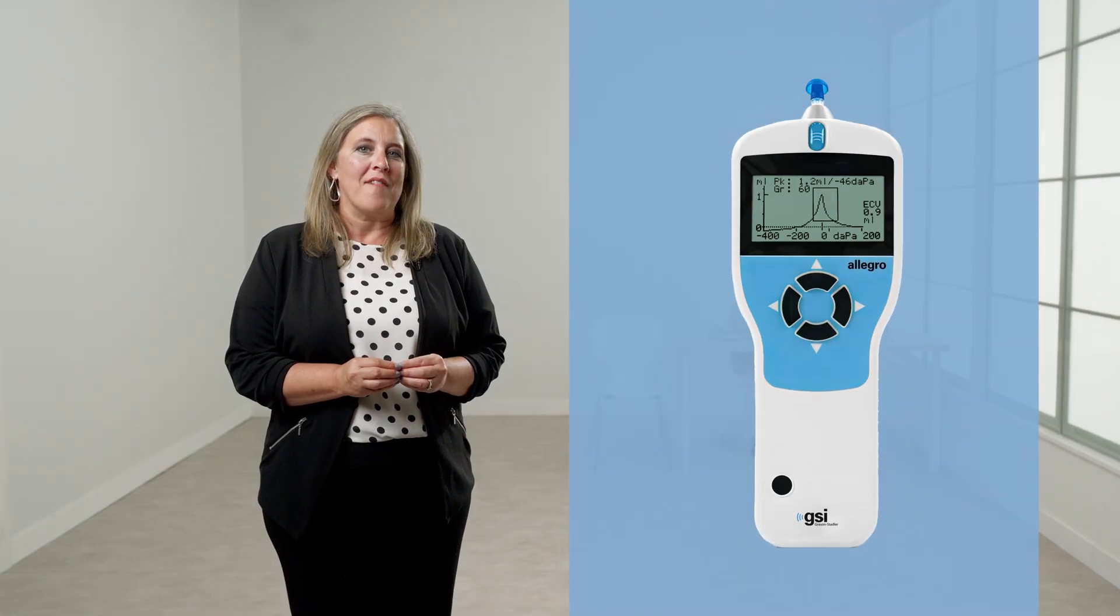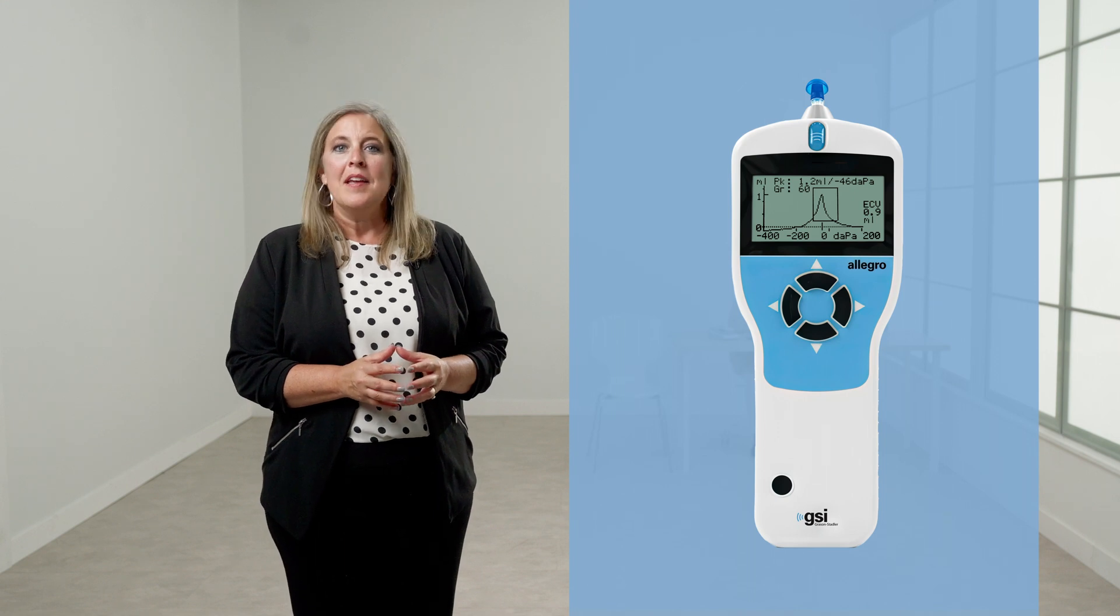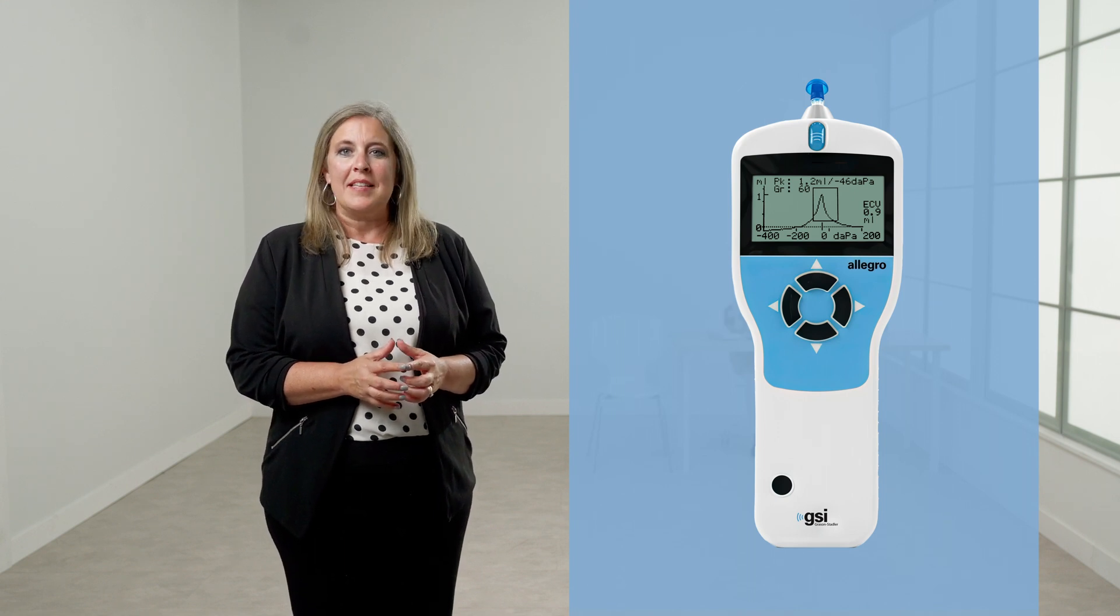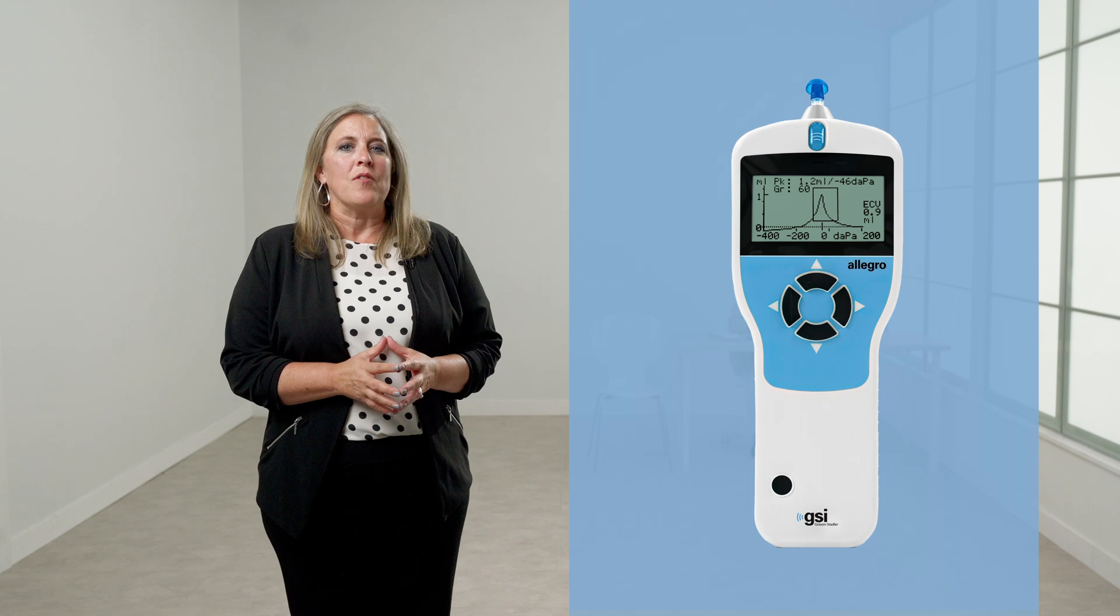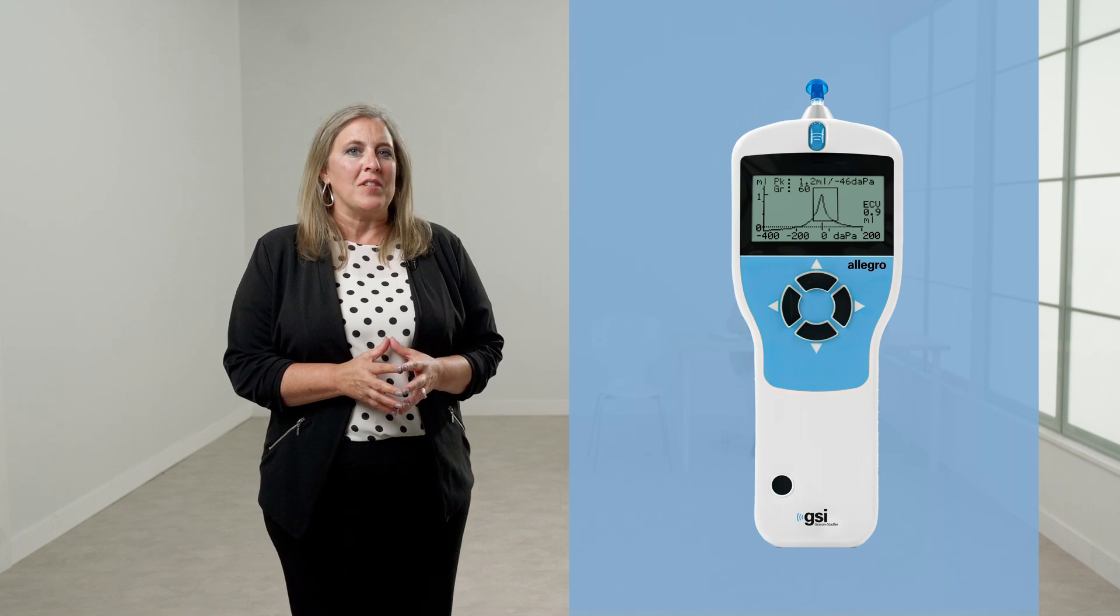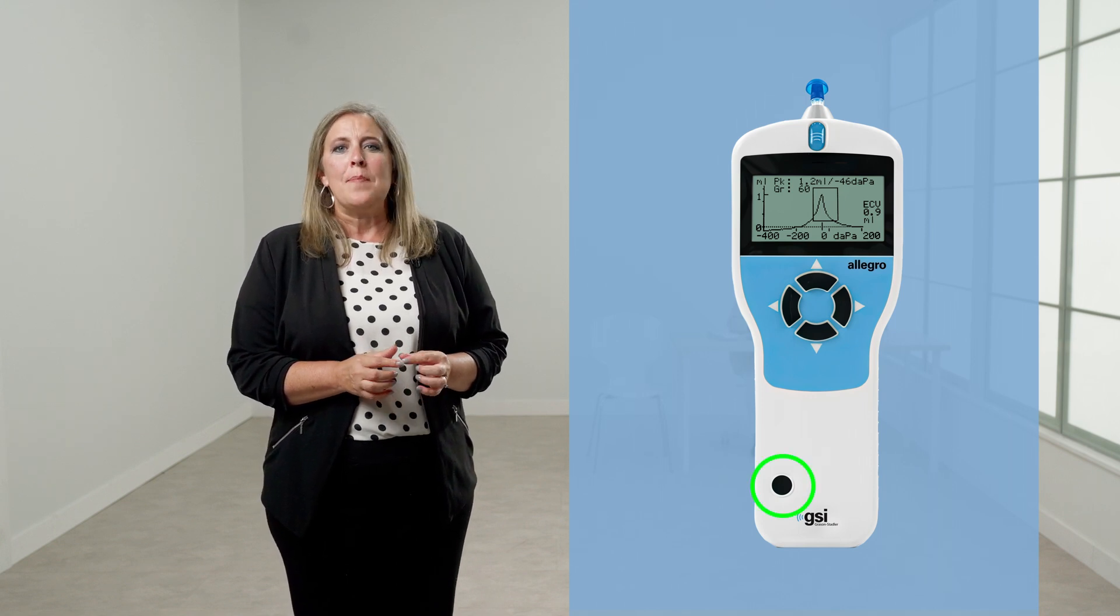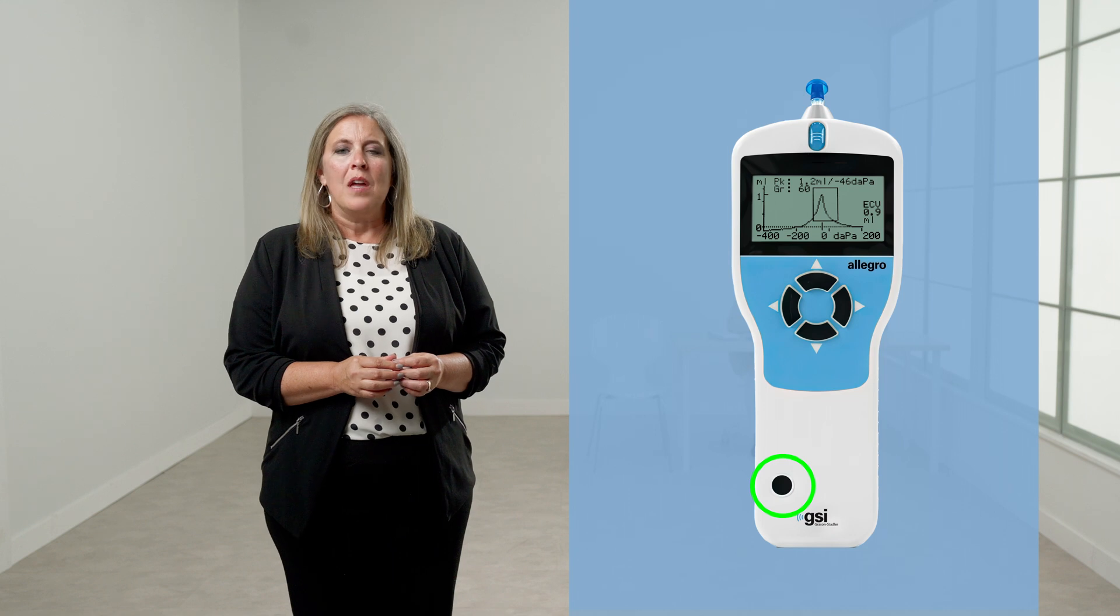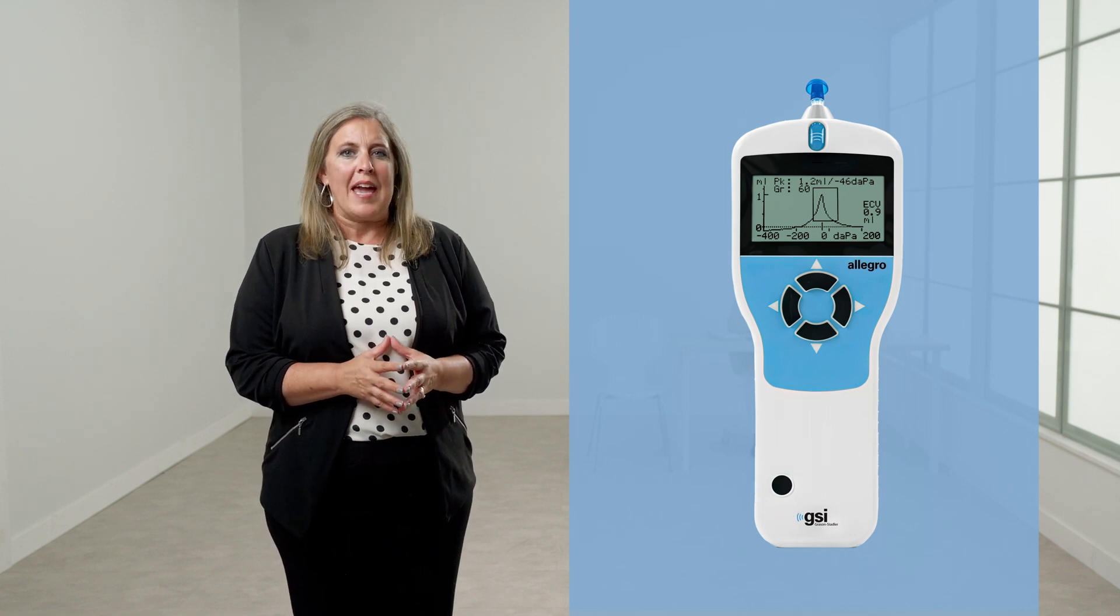The Allegro handheld instrument consists of four navigation buttons and a power button. The LED screen displays testing information as well as information that is accessed in the menu for setting defaults. Press the power button to turn on the Allegro. There will be a short diagnostic check and the pump will engage.